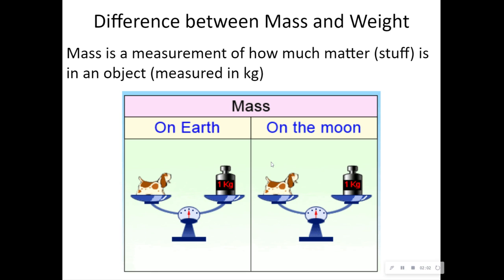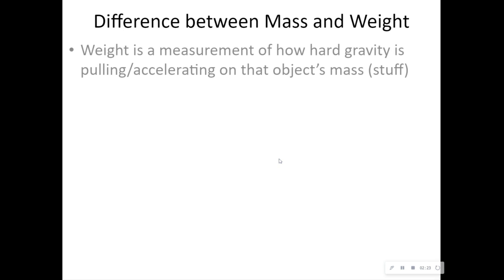So here's the difference between mass and weight. Now mass is going to be the same no matter where you are. So whether you are in the asteroid belt or if you're on Earth or if you're standing on Mercury, it doesn't matter. Your mass will always be the same. And that's measured in kilograms when we talk about science.